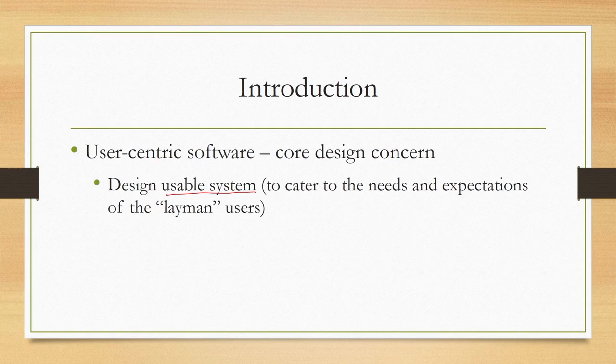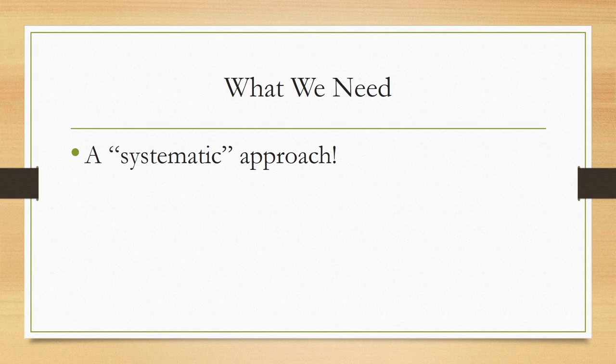Why do we need it? We need it to cater to the needs and expectations of the users. Remember that here we are referring to layman users, so our objective is to cater to the needs and expectations of layman users. If we are able to do that, then we can say with confidence that our system is usable. To achieve that, we need to follow some sort of systematic approach — a step-by-step process to build user-centric software, so that at the end whatever we get as output is a usable system.